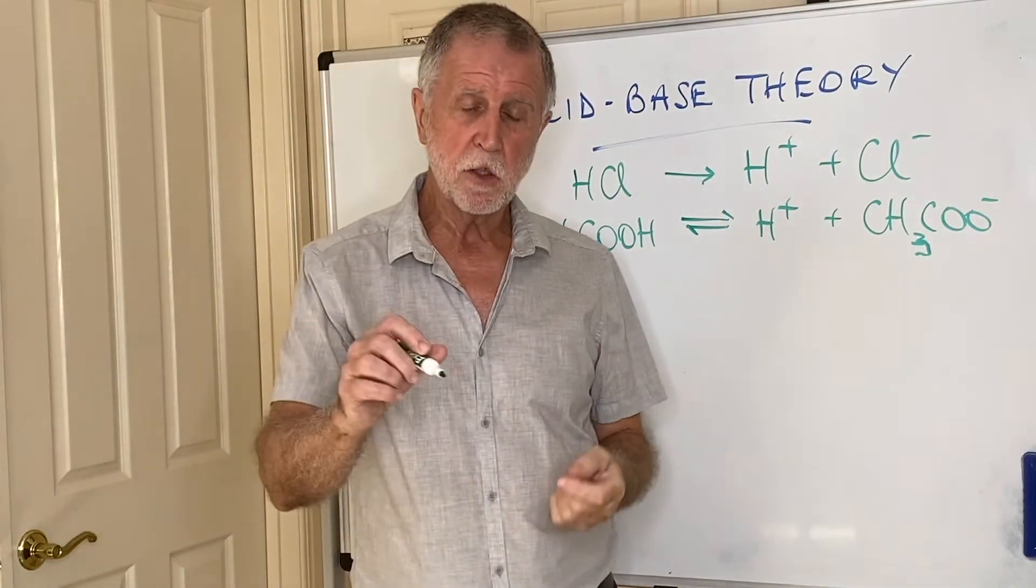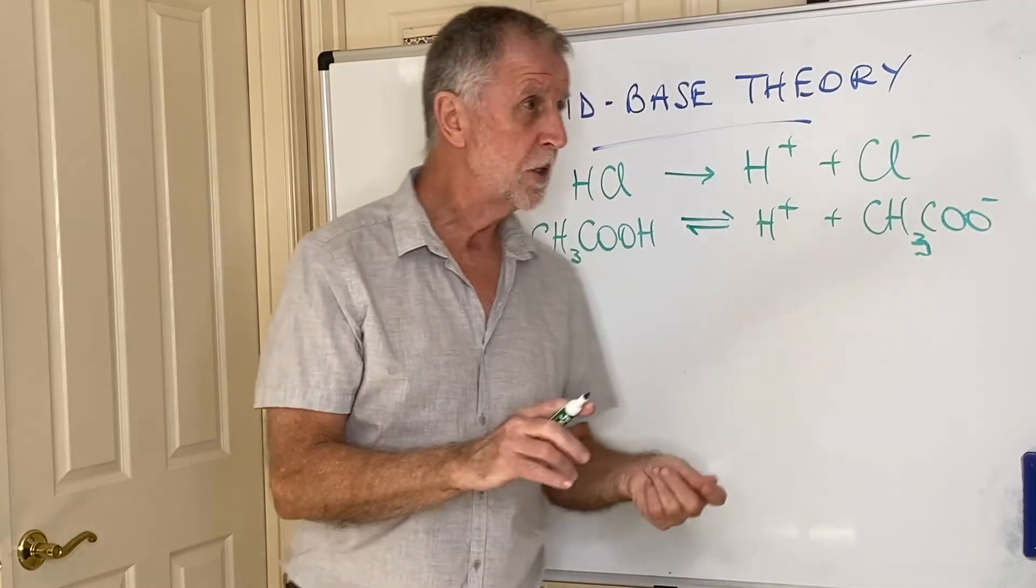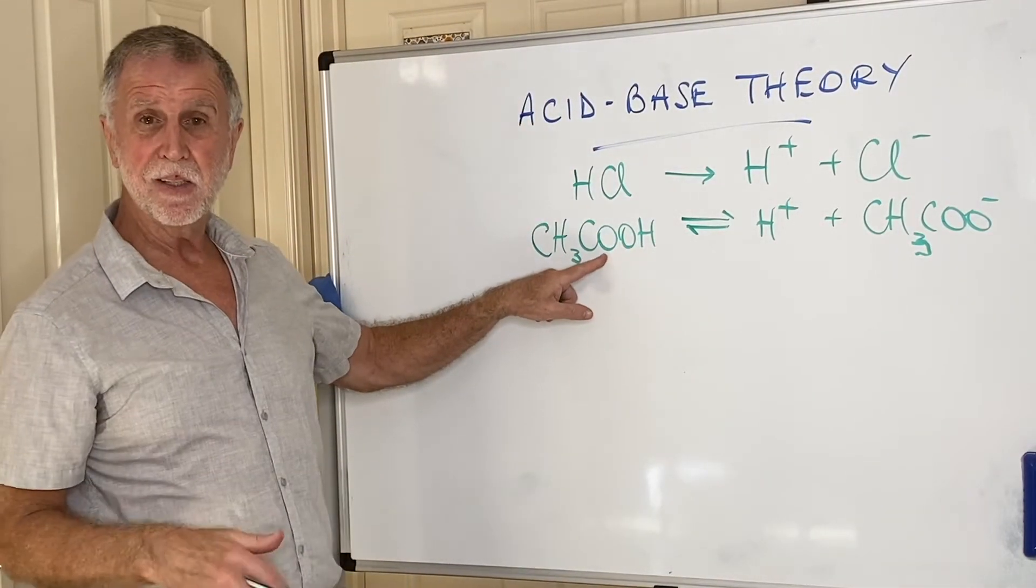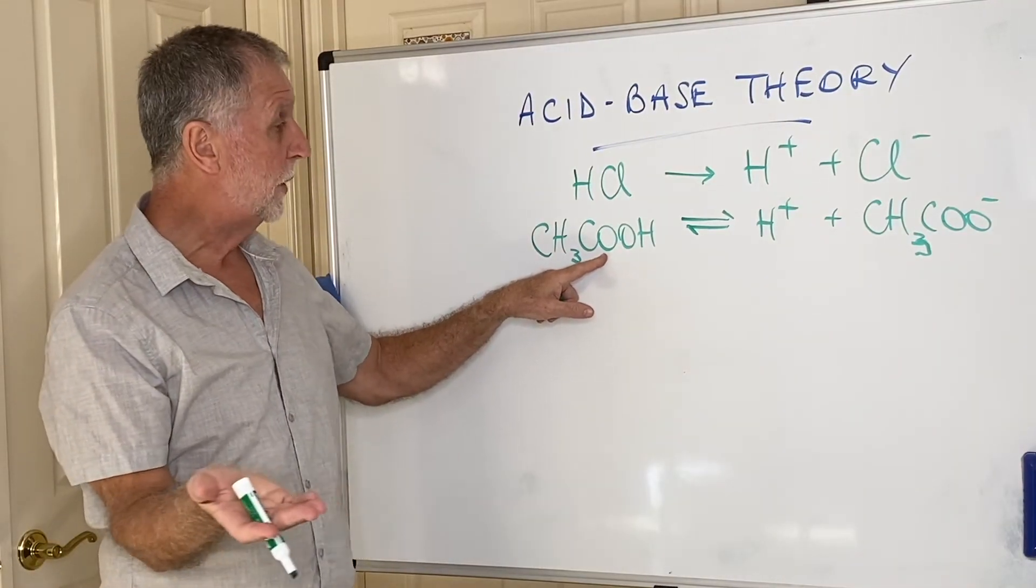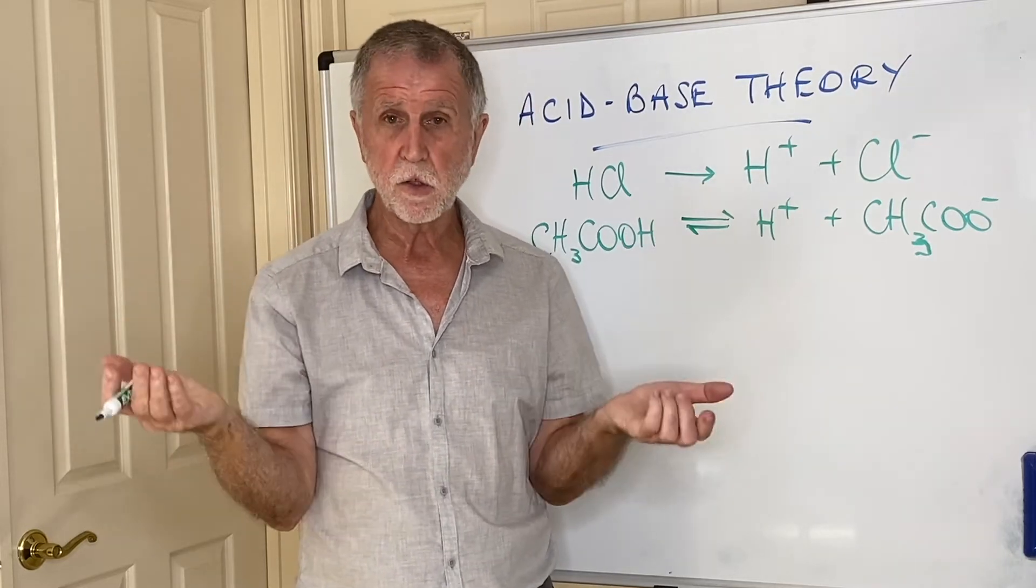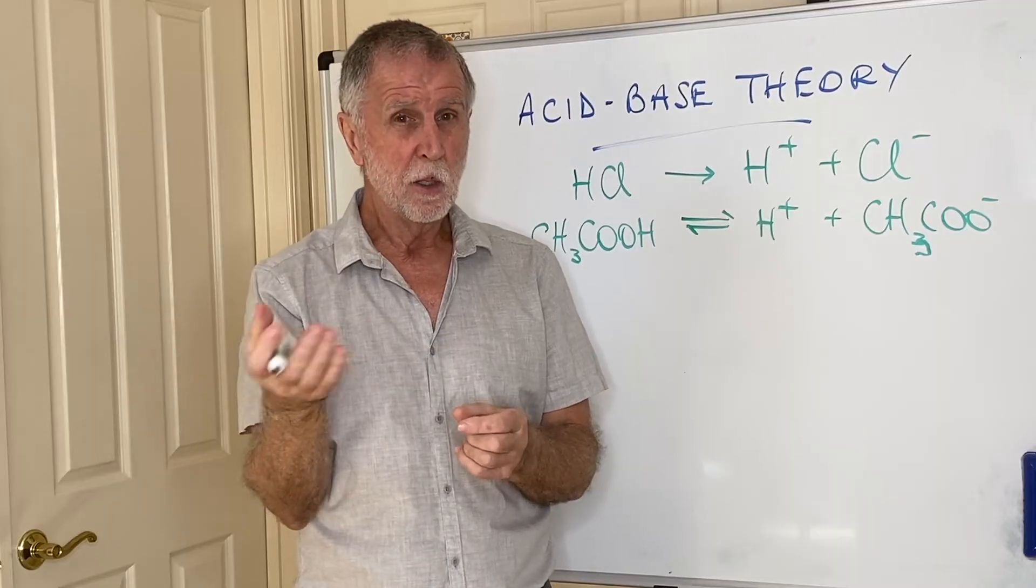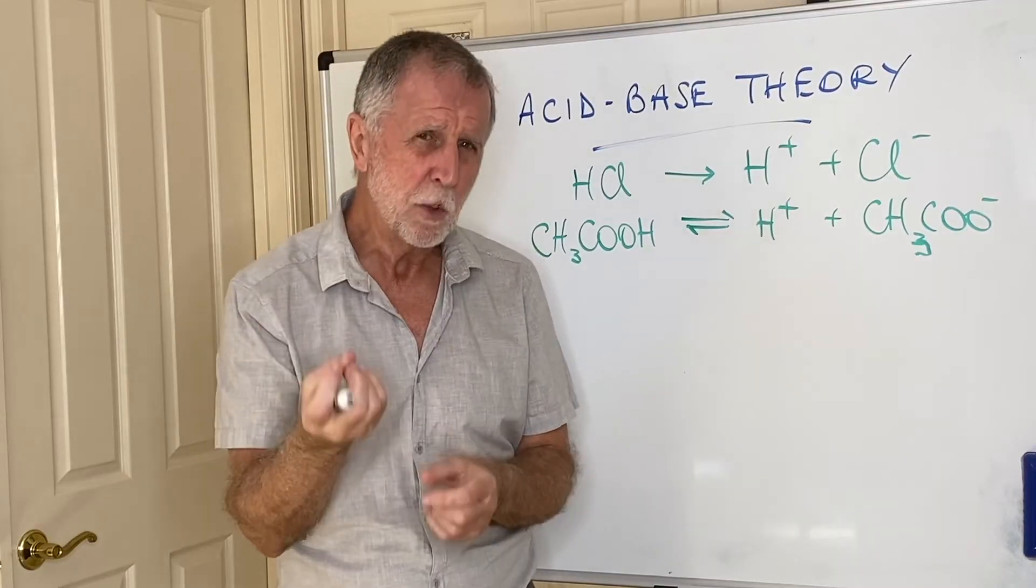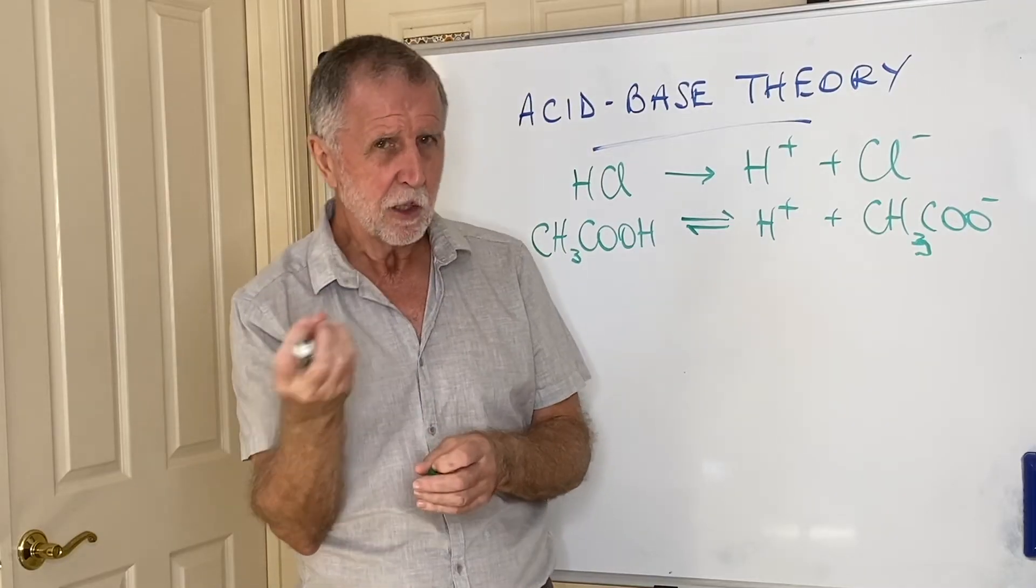In the syllabus, they will expect you to know hydrochloric, sulfuric, and nitric are strong acids. They'll expect you to know the carboxylic acids in general, the family of them, are weak acids. They include things like citric acid in lemons, oranges, and so on. They include tartaric acid, which is in grapes. These are all acids that we can eat safely. So clearly they can't be very strong.